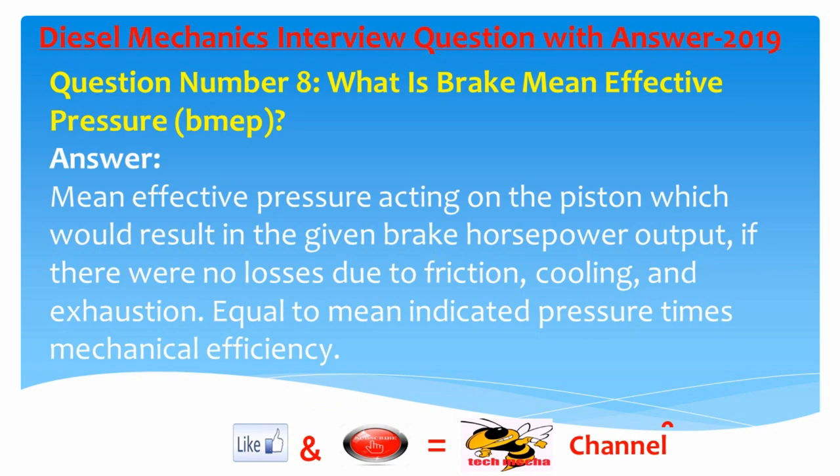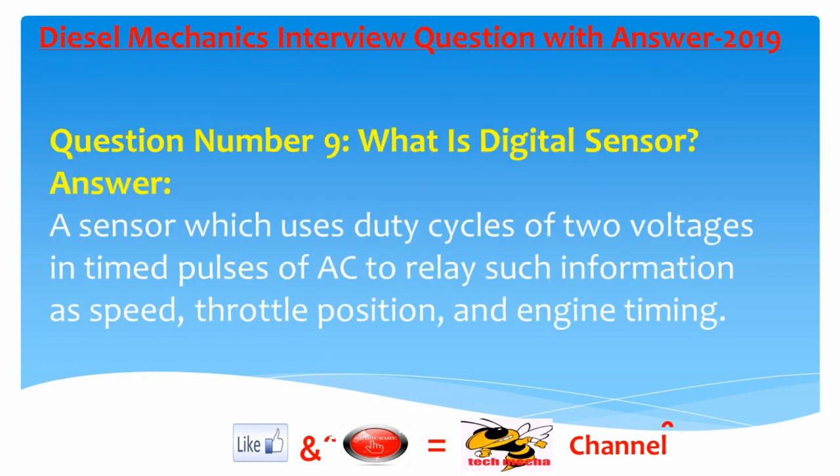Question number eight: What is brake mean effective pressure (BMEP)? Answer: The mean effective pressure acting on the piston which would result in the given brake horsepower output if there were no losses due to friction, cooling, and exhaustion. It equals mean indicated pressure times mechanical efficiency.